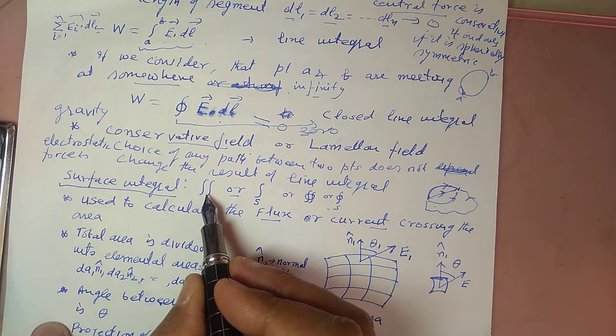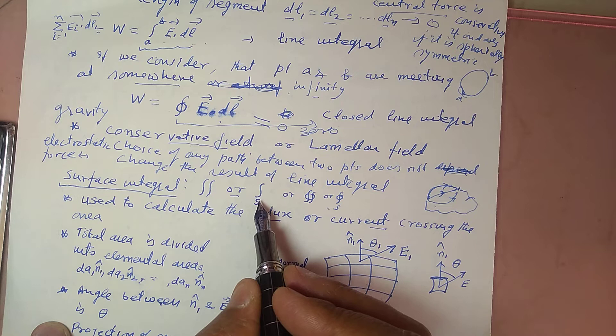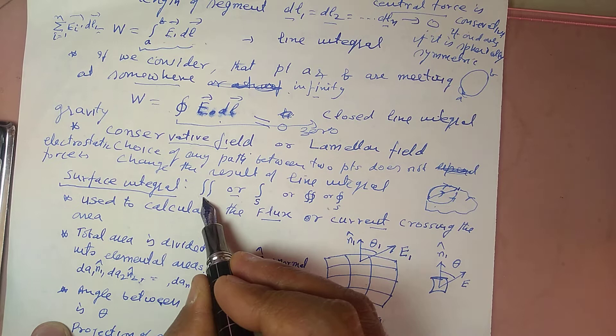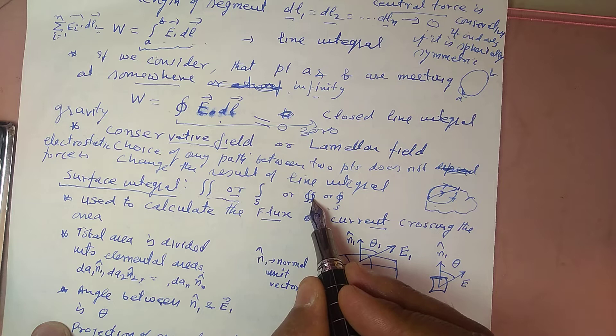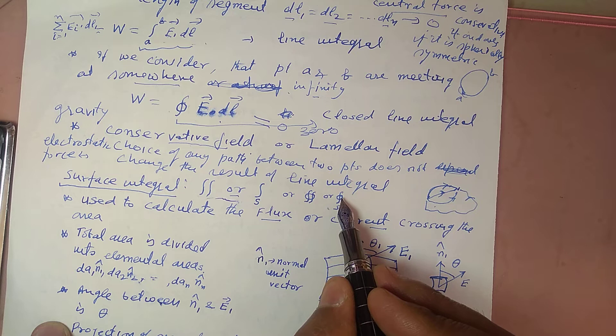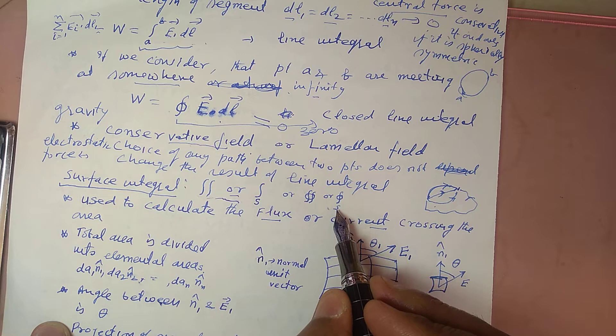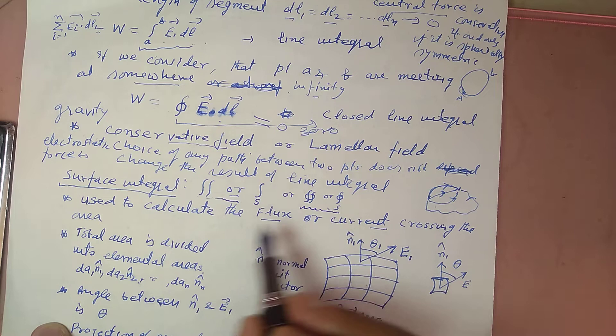Now we will discuss the surface integral. I can denote it with the help of two distorted s symbols, or I can write s with a subscript s at the bottom. I can also use an encircled double distorted symbol or a single encircled distorted s with s — both represent the closed surface integral.